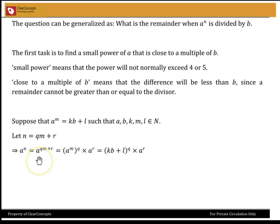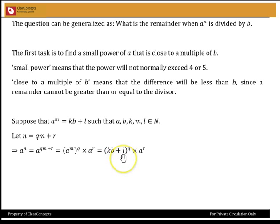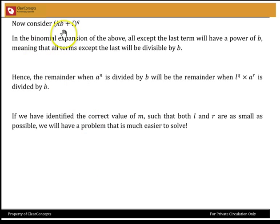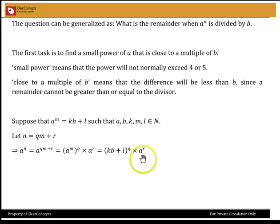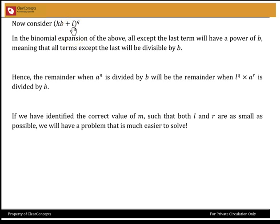So A to the power of N would be A to the power QM plus R, and I can write that as A to the power M, whole to the power Q, times A to the power R. Now let's consider KB plus L, whole to the power Q. This is a binomial expression, and we can expand it using the binomial theorem. All the terms except the last term will have some power of B — in other words, all terms except the last will automatically be divisible by B.